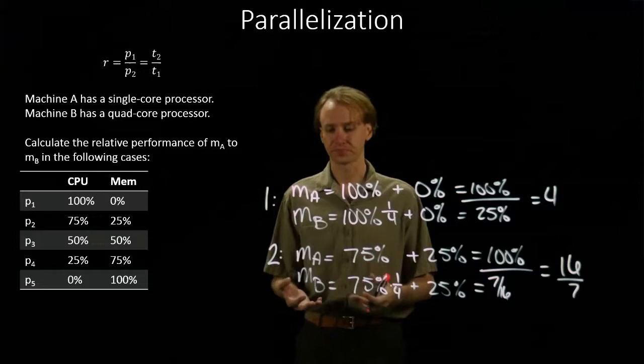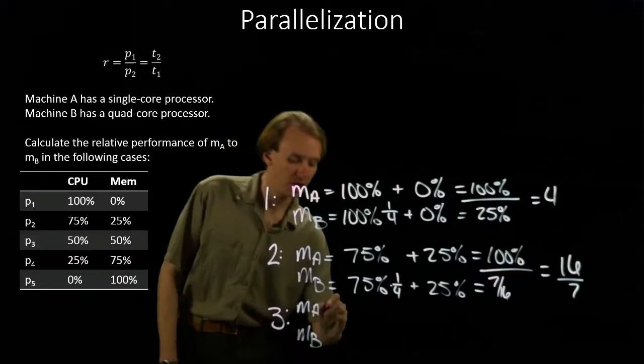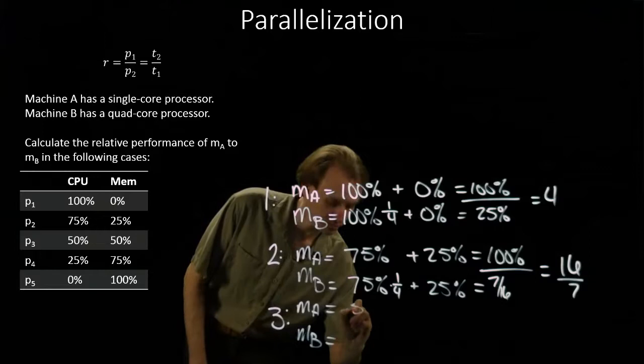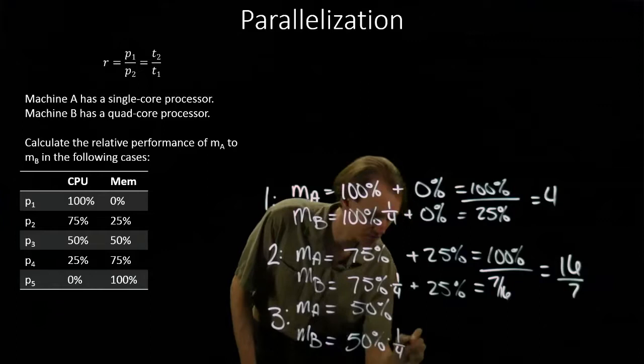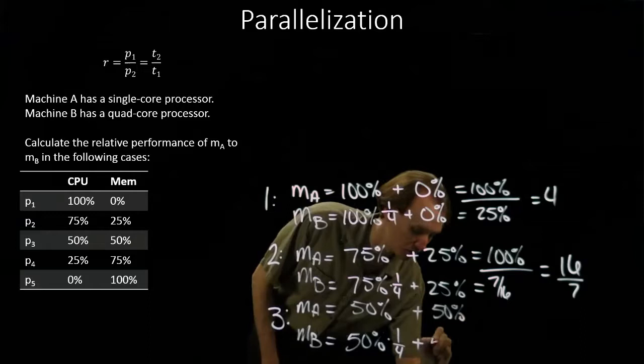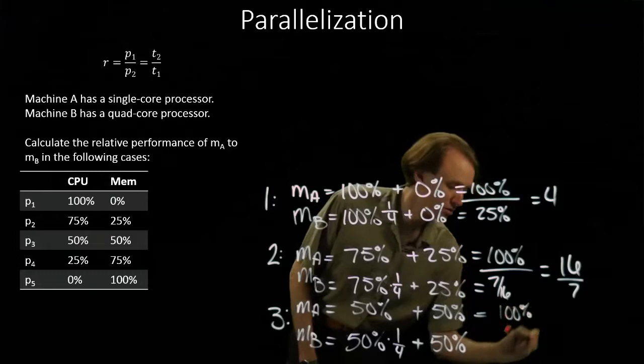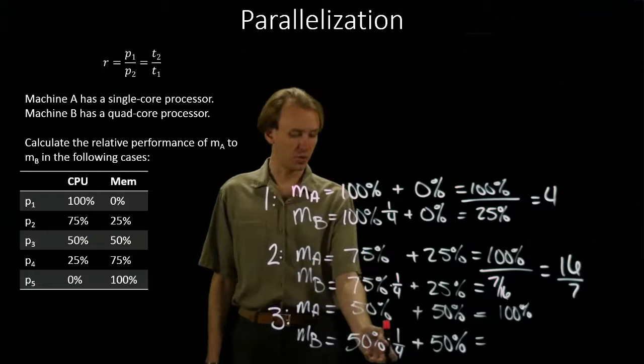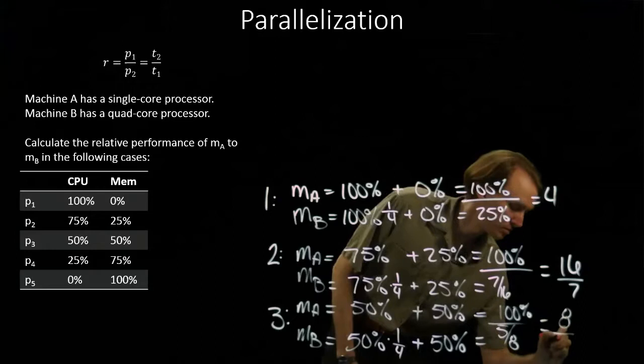And the same thing for number three. But this time our ratios of CPU to memory have changed again. Fifty percent of the operations are CPU operations. And again, Machine B spends one-quarter as much time as Machine A did on those. And the other fifty percent of the operations are memory operations. And increasing the number of CPUs doesn't affect those. This time I have fifty percent plus one-eighth gives me five-eighths. Or I could say that Machine B is eight-fifths times faster than Machine A.